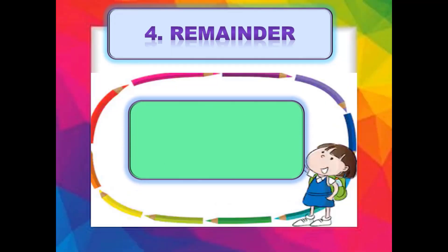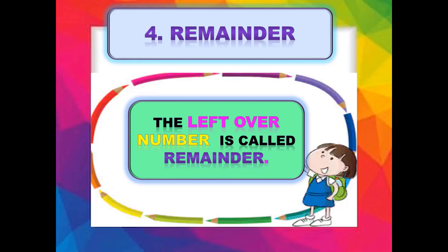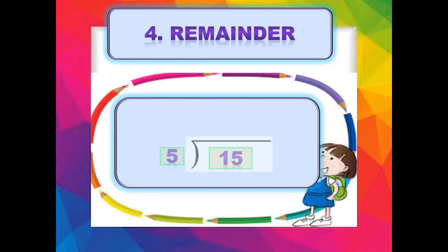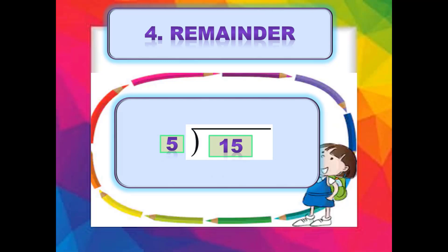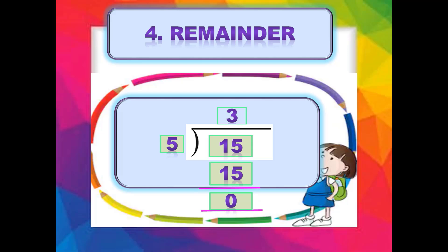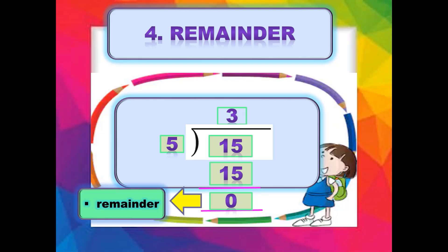Now our fourth term is remainder۔ The leftover number is called remainder۔ وہ number جو division کے بعد ہمارے پاس بچ جاتا ہے اسے remainder کہتے ہیں۔ Is example میں: 5 times 3 = 15، ہم نے 15 لکھا، 15 minus 15 = 0۔ تو اس question میں left over number کون سا ہے؟ That is 0۔ In this case our remainder is 0۔ 0 بھی remainder ہو سکتا ہے یا کوئی اور number بھی ہو سکتا ہے۔